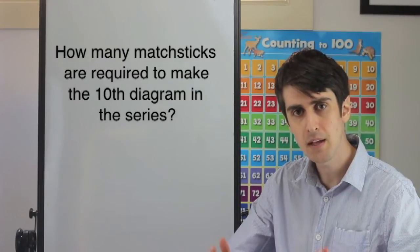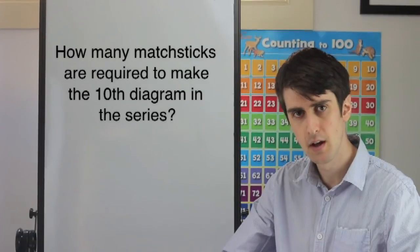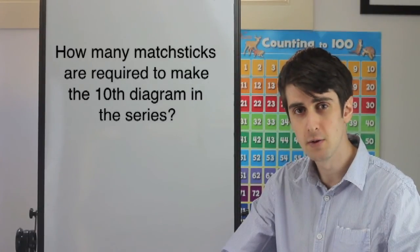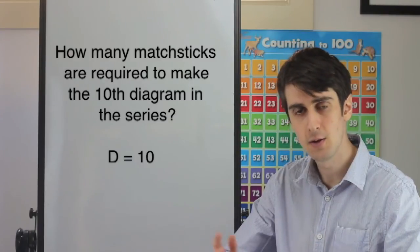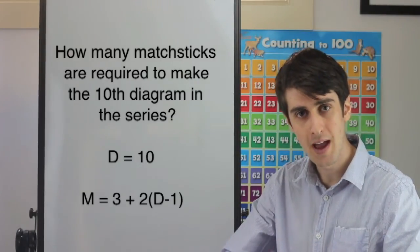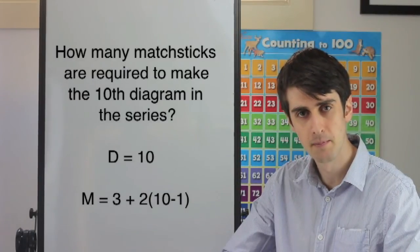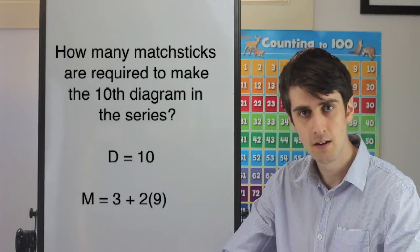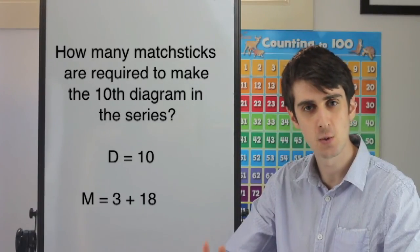Now that we know that the formula works, we can answer our question. The question asks us to find how many matchsticks are required to make the tenth diagram in the series. To find this, all we need to do is substitute d equals ten into our formula. So, m will equal three plus two times ten minus one. Ten minus one is nine. Two times nine is eighteen. Three plus eighteen is twenty-one.